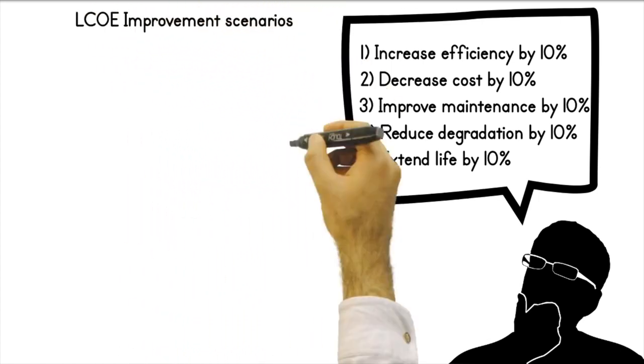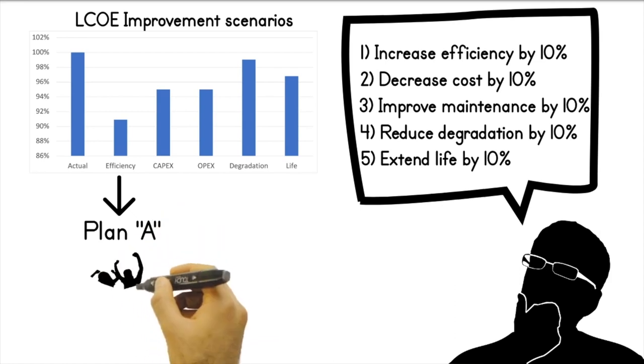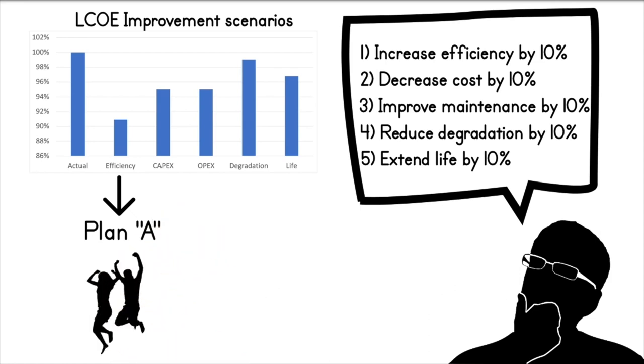In this case, if the company decided to invest its resources in improving efficiency, its value proposition for customers would be more attractive and consequently the value of the company would be susceptible to improvement. On the contrary, if you had decided to invest your resources in reducing degradation throughout life, your competitive situation would not improve or could even worsen depending on what your competitors offered to the market.